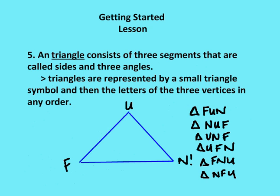Okay, last part of this lesson. Triangle consists of three segments now that are called sides and three angles. Triangles are represented by a small triangle, so this object here, and then the letters, it's a symbol, and then the letters of the three vertices in any order. So I can have triangle FUN, triangle NUF, triangle UNF, triangle UFN, etc. So there are six different possibilities for you to write this particular triangle, or represent.